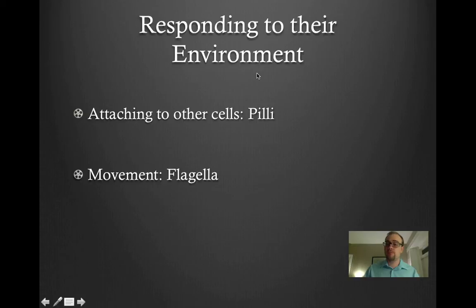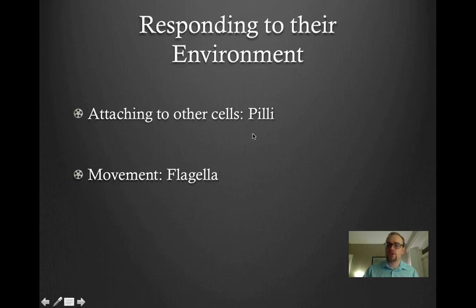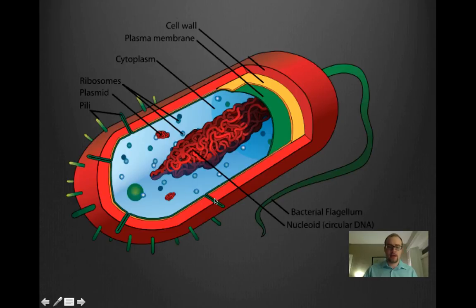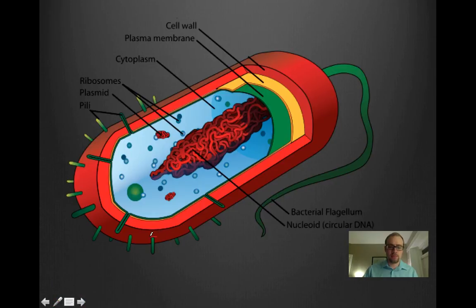Bacteria can respond to their environment — one of the main criteria for a living organism. There are a few ways bacteria can do this. One is they can attach to other cells using chemical structures called pilli. These projections allow bacteria to attach to other bacteria or to other things, which helps them take up nutrients and is also useful when bacteria need to reproduce.